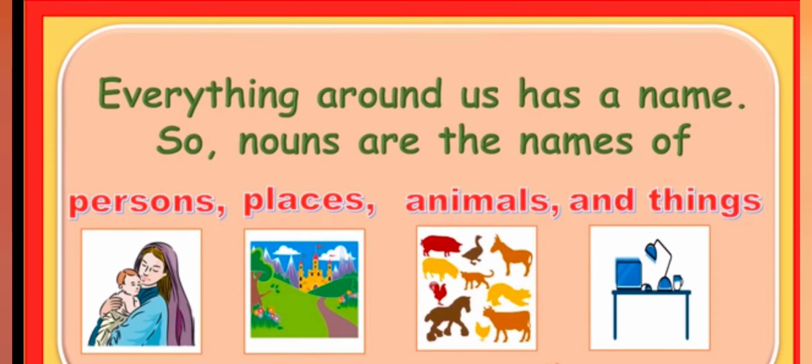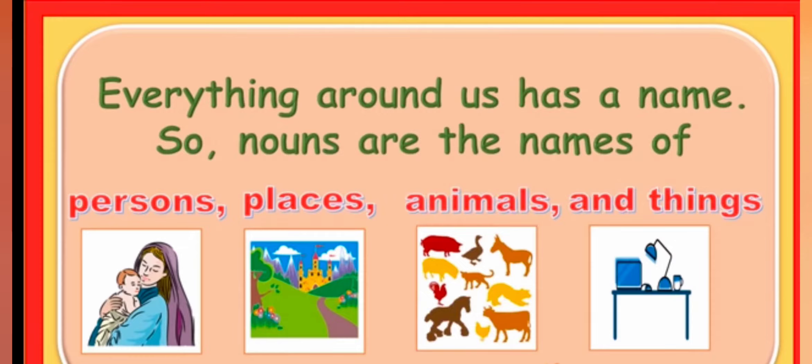Students, as I have explained to you that everything has a name. So, let us read all together. Everything around us has a name. So, nouns are the names of persons, places, animals and things.